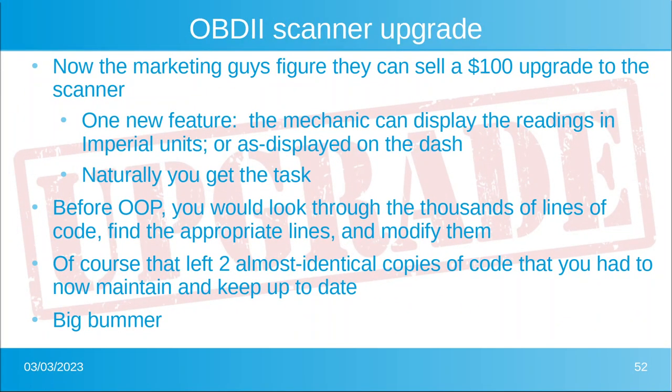The OBD2 scanner company figures out they can sell a $100 upgrade on the scanner with many new features, including the ability for the mechanic to display readings in imperial units or as displayed in the dash. Before object-oriented programming, you would have to look through thousands of lines of code, find the appropriate lines, and modify them. But then you'd be left with two nearly identical pieces of code to maintain, because you were selling two versions of the product. Back in the 90s, that was a big bummer.